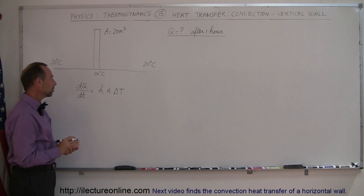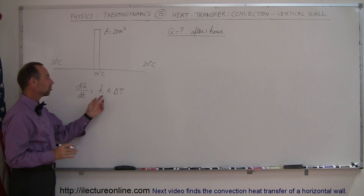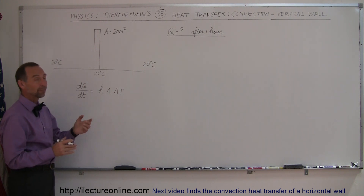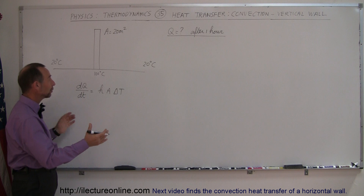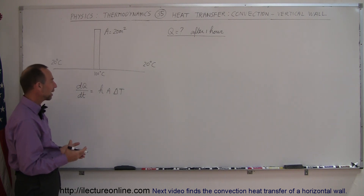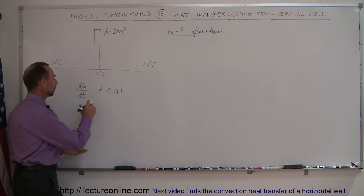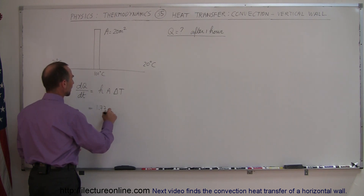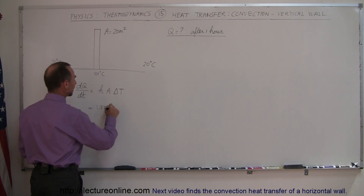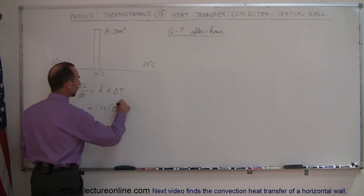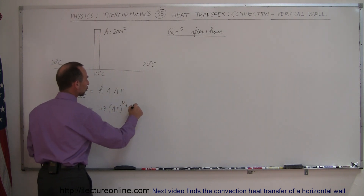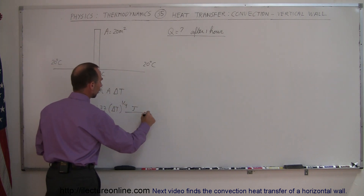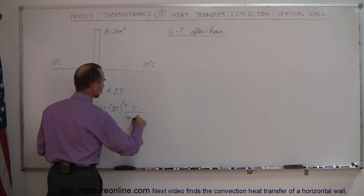The equation says that heat flux Q is equal to H times A times delta T. H depends on the fluid taking the heat away — in this case it's air. For air on vertical walls, H equals 1.77 times delta T to the 1.75 power, and the units are joules per second per meter squared per centigrade degree.